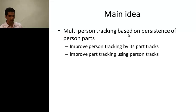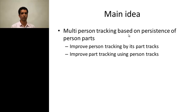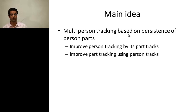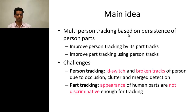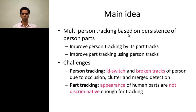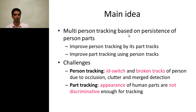The main idea of the paper is that we want to use the persistence of the part tracks to improve the tracking of the person, and also use the track of the person to improve the track of the part. The challenges for person tracking are broken tracks and ID switches, due to occlusion, background clutter, and misdetection of the person.